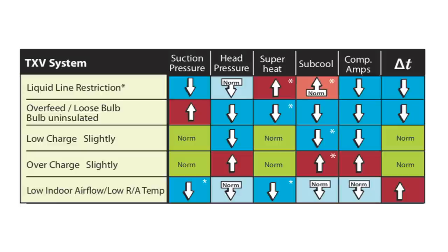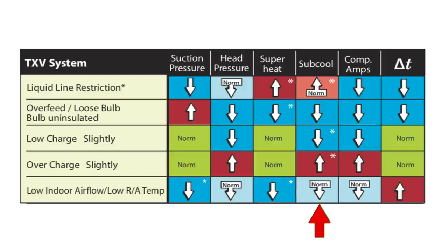Let's go through them all very quickly. When you have low airflow, you're going to have low suction pressure, low to normal head pressure — it does depend on what the outdoor temperature is — and superheat is going to be low. Subcool is going to be normal to low, and compressor amps are going to be normal to low.